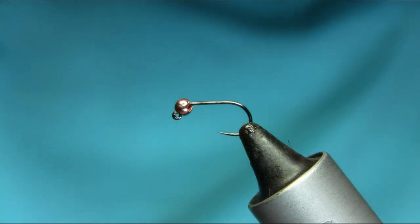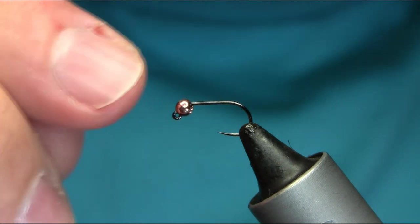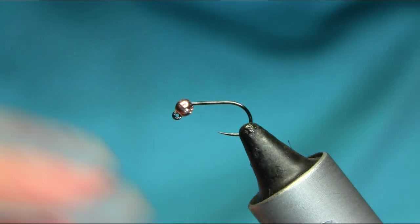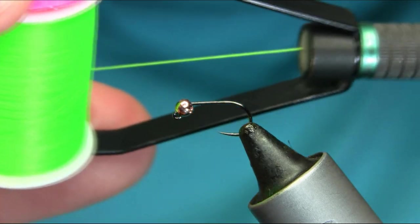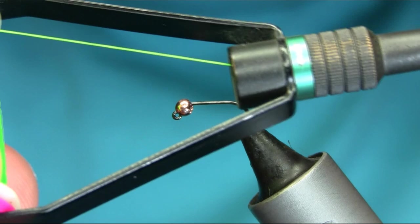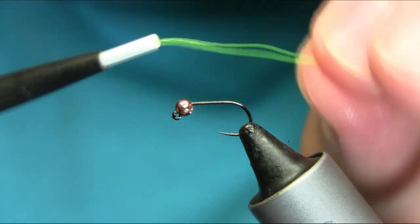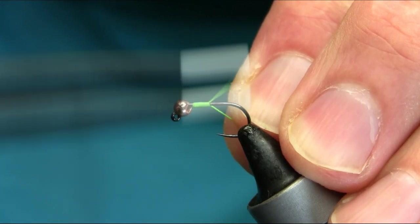Hi everyone, this is a size 16 jig hook and the bead I'm using is a tungsten 2.8 millimeter copper bead. First I'm using number 12 glow bright, which is fluorescent green, just to add some tug and work with the body.